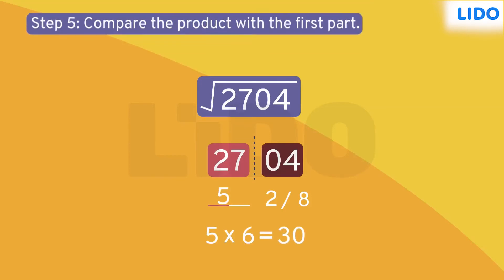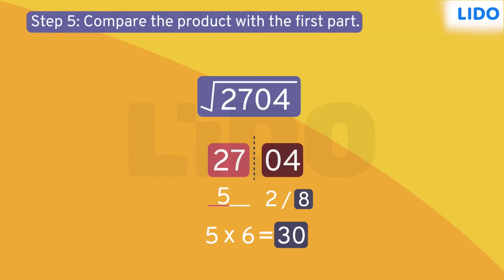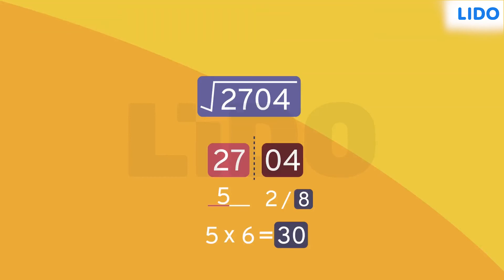Now we will compare this product with the first part. If the first part is greater than the product, we will select the greater number that is 8. If the first part is less than the product, we will select the smaller number that is 2.